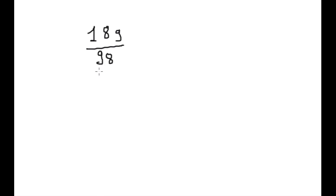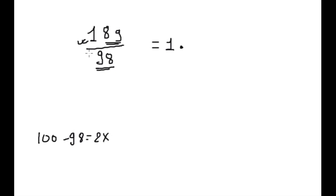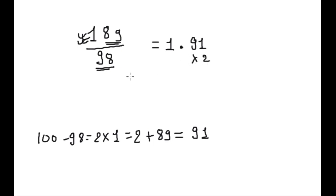Next example: 189 × 98. This is 2-digit, this is 2-digit, and the third digit is 1, so our answer will start with 1. Next step: 100 minus 98 is 2, multiply by this 1 equals 2, plus 89 equals 91. We write 91 here, then multiply by 2 — because 98 is 2 less than 100 — giving 280.